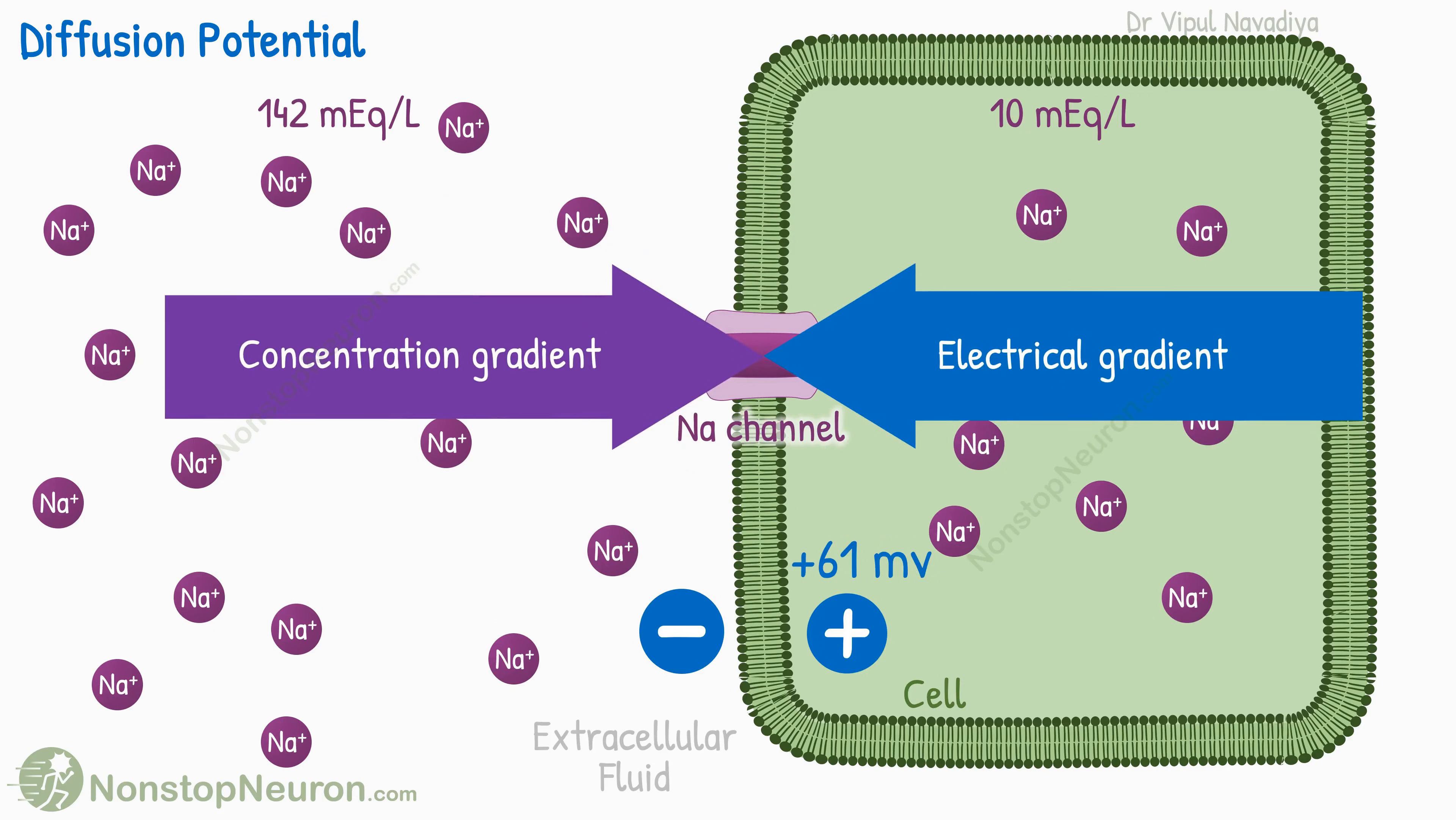For sodium, this happens at about 61 millivolts, with positivity inside the cell. So, this would be the equilibrium potential if the cell was permeable to sodium only.